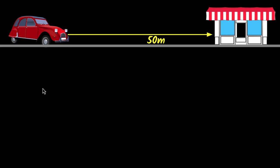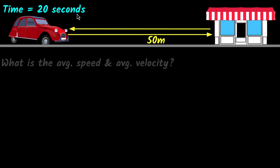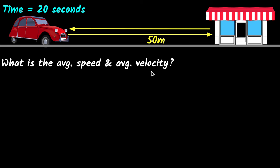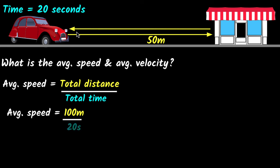Let's look at another example. A car drives 50 meters to a shop and then comes all the way back. The whole journey takes 20 seconds. Can you pause and try to figure this out yourself? The total distance is 50 meters to the right plus 50 meters back, which is 100 meters. Divided by 20 seconds, the average speed is five meters per second.